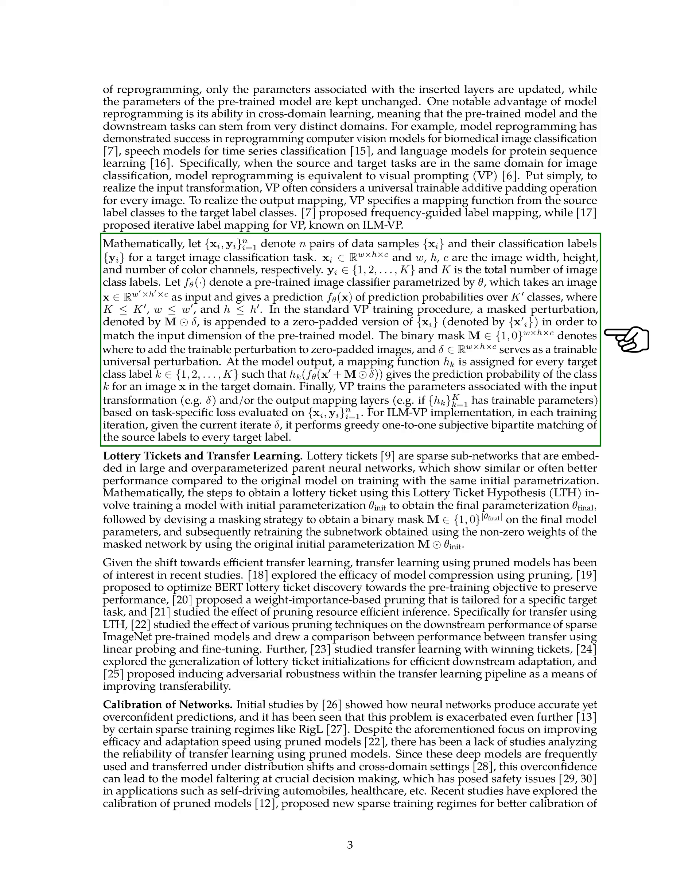Let's break down the mathematical aspect. Suppose we have n pairs of data samples and their corresponding classification labels for a target image classification task. Each image has dimensions W by H by C, where W is the width, H is the height, and C is the number of color channels. Each label is a number from 1 to K, where K is the total number of image class labels. We have a pre-trained image classifier that takes an image as input and gives a prediction of probabilities over K' classes. In the standard VP training procedure, a masked perturbation is added to a zero-padded version of the image to match the input dimension of the pre-trained model. At the model output, a mapping function is assigned for every target class label to give the prediction probability of the class for an image in the target domain. VP trains the parameters associated with the input transformation and output mapping layers based on task-specific loss evaluated on the data samples and their labels.